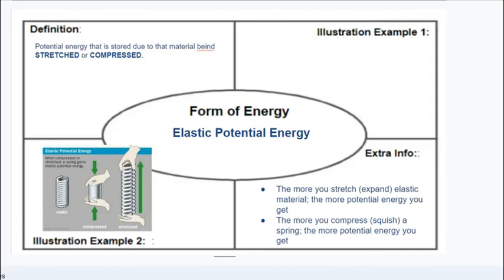The definition of elastic potential energy is potential energy that is stored due to the material being stretched or compressed. I will fix that typo. Springs can either be stretched or compressed—that is my illustration. You can use some of the pictures that I used before, or you can come up with your own, or some that I spoke about that I didn't put a picture of.